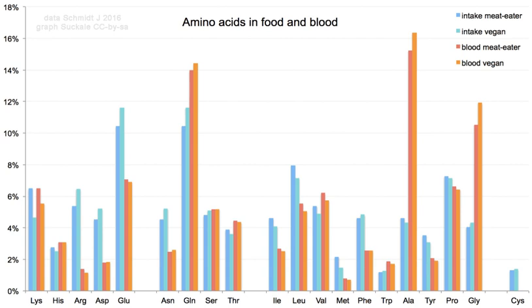About 500 naturally occurring amino acids are known and can be classified in many ways. They can be classified according to the core structural functional groups locations as alpha, beta, gamma, or delta amino acids.